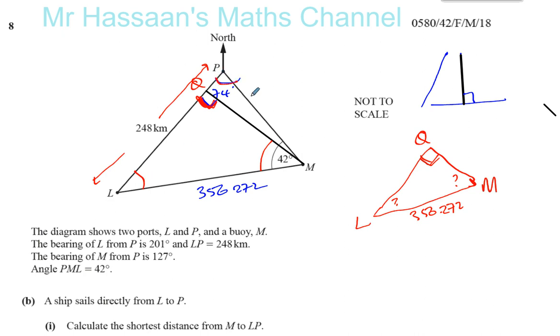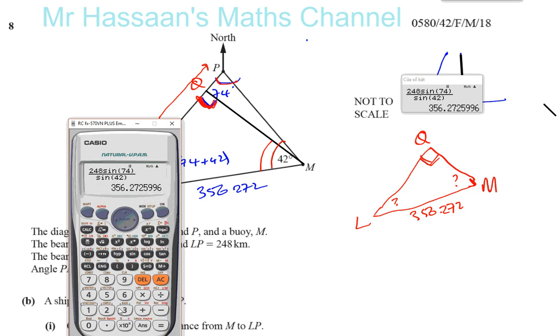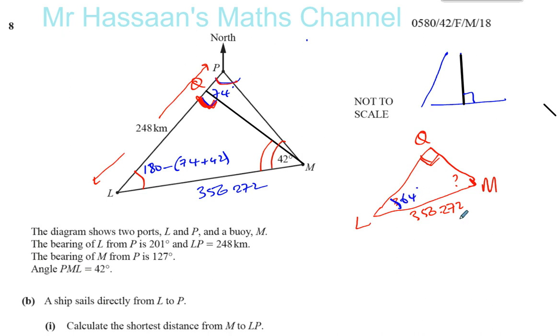I know that this is 356.272. I know this is a right angle. But I don't know this angle, and I don't know this angle. However, if you think about LPM, this big triangle, I can find this angle. This angle is the third angle out of the three angles in this triangle, the big triangle. So this is 180 minus 74 plus 42. That gives you 64 degrees. So I know that this angle here is 64 degrees.